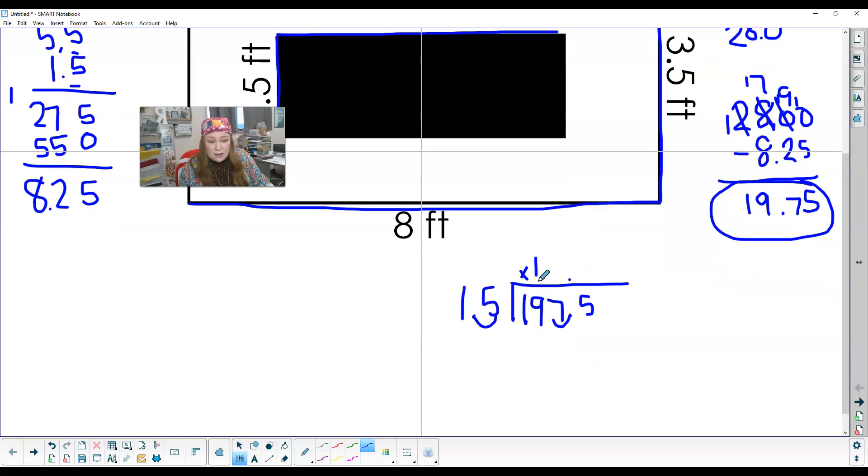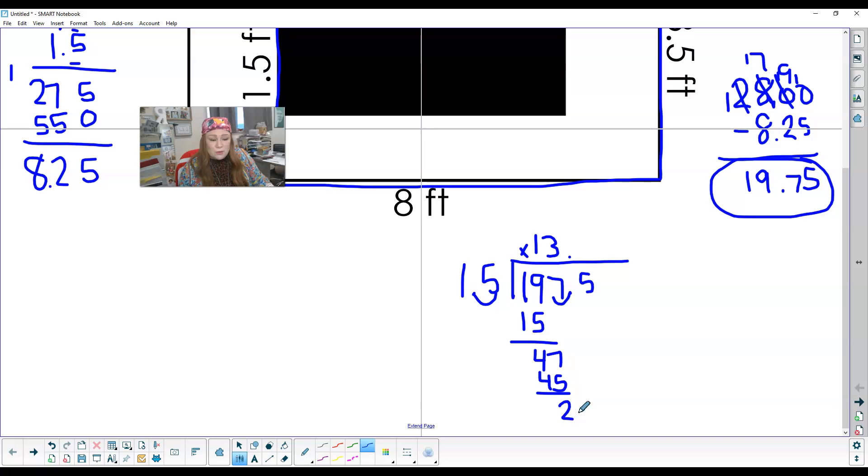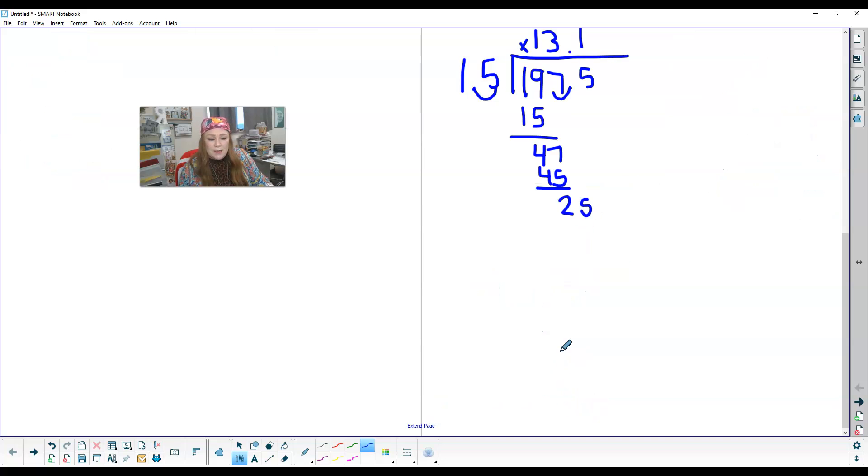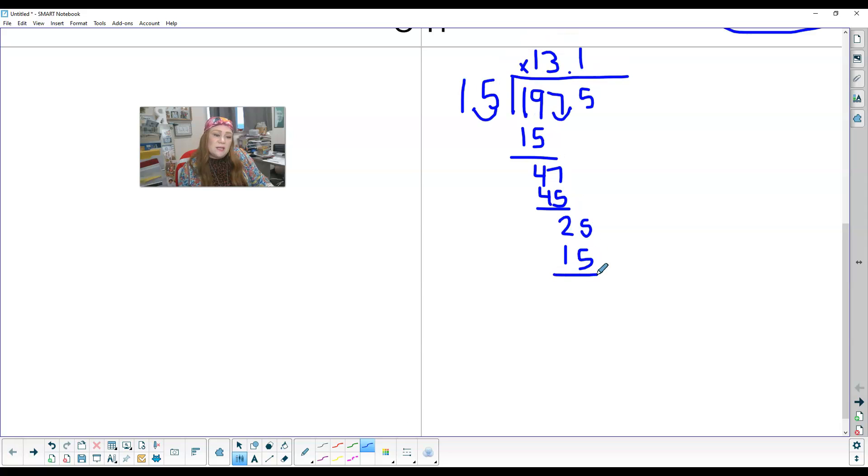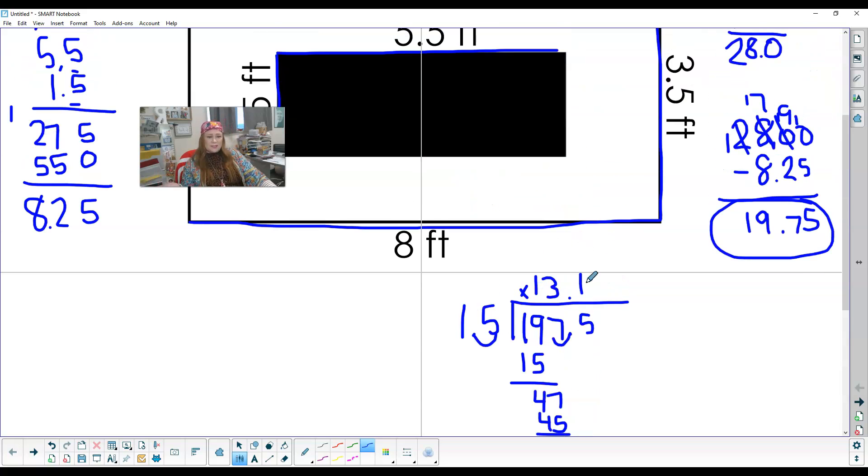It goes in there one time, and there's 15, which is 4 left over, goes in there 3 times, and 2 left over, which is 1 time, and 15, that's 10 left over, bring down a 0. It's going to keep on going, so I need 13 tiles and a little bit more.